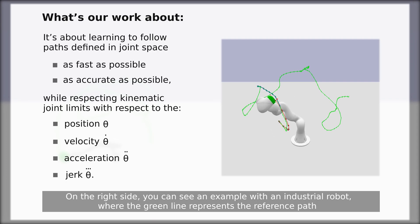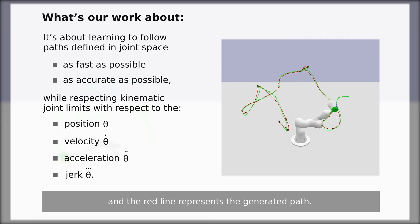On the right side, you can see an example with an industrial robot where the green line represents the reference path and the red line represents the generated path.